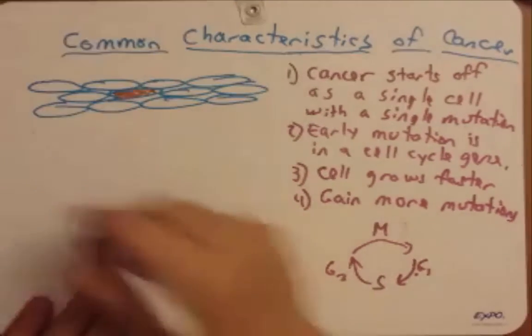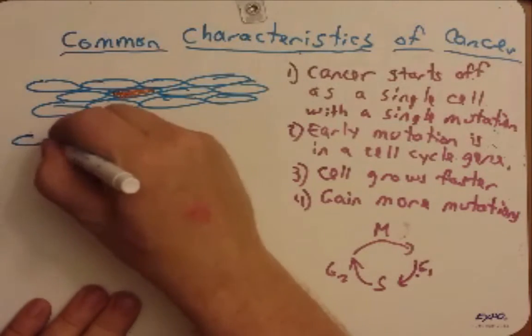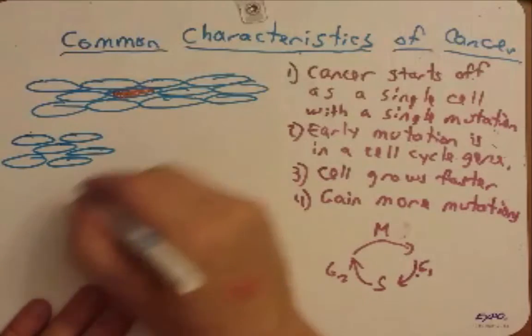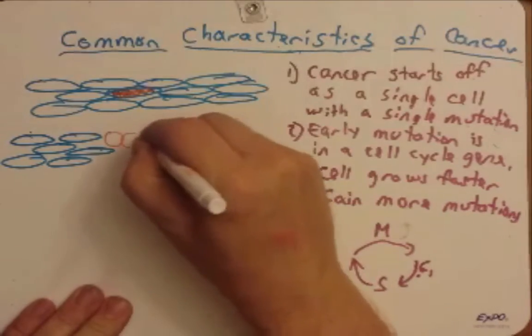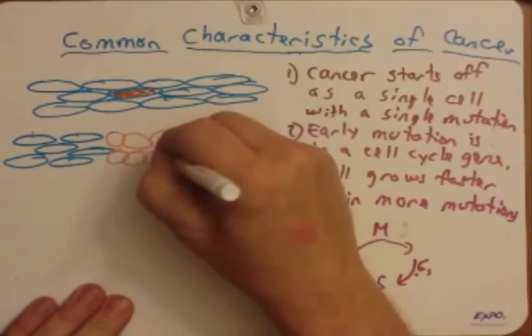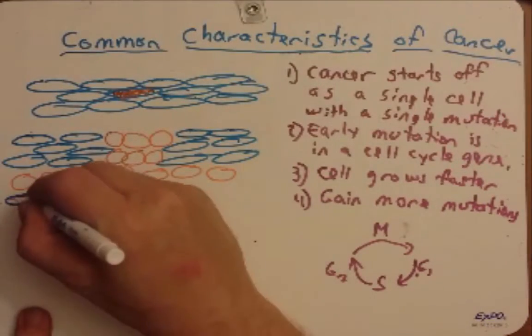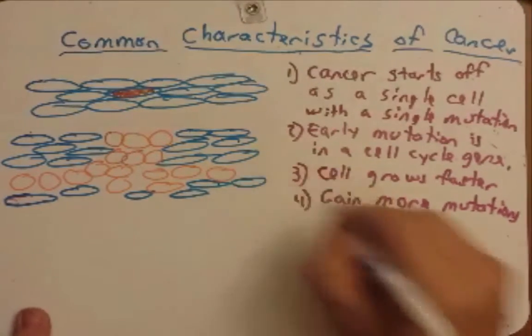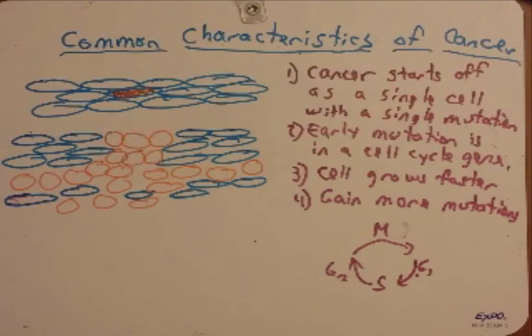Now what happens is, because it's growing faster and gaining more mutations, we're going to draw our new mutant cells here. One is that I have them growing a little faster. These mutated cells are growing faster now. Not only are they growing faster, but they begin to look a little different now.